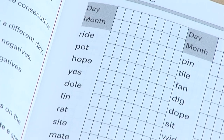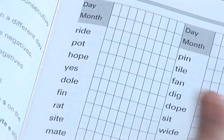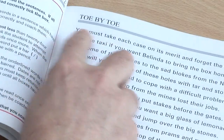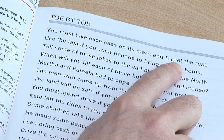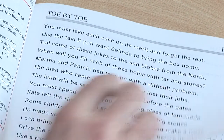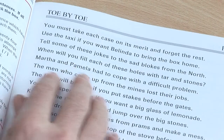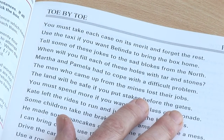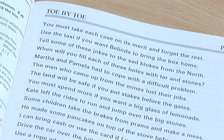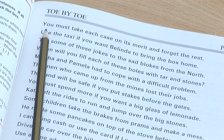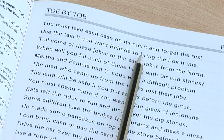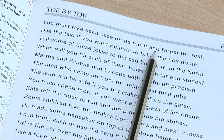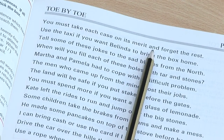The nonsense words are followed by real words which contain exactly the same skill. This is then followed by sentences with controlled vocabulary that just cover the skills that we have already taught in Toe by Toe. Your student will read the sentence. If they make a mistake, the word is underlined for extra practice.